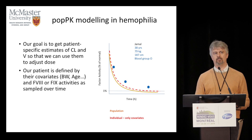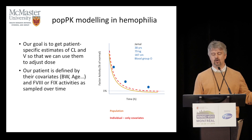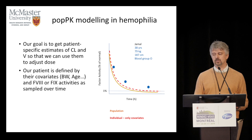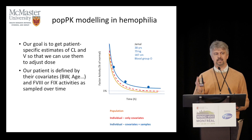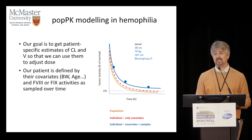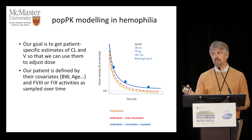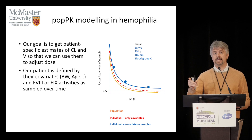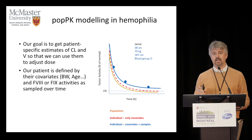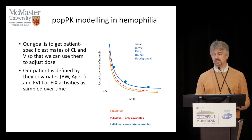Then if I draw three samples, I can ask a complex statistical software to move that line to cross those three samples. This is why PopPK — taking into account all the other information — can do a very good job with only a few samples.